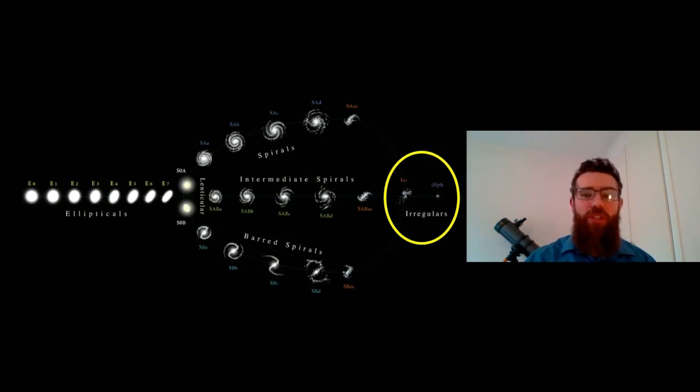But on this galaxy classification tuning fork, the irregular galaxies sit off to the right. You can't really refine their classification much more than being irregular. There's a couple of things you can do but because they're just irregular shapes, they don't have a structure which is common amongst them all, they're all very different, so they sit in their own category really, they're not really part of the main tuning fork diagram.